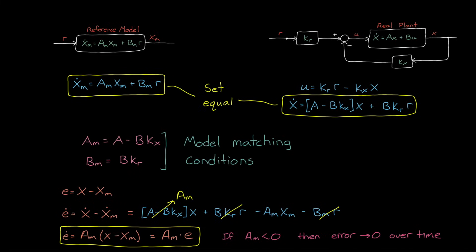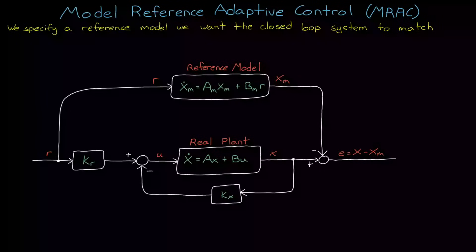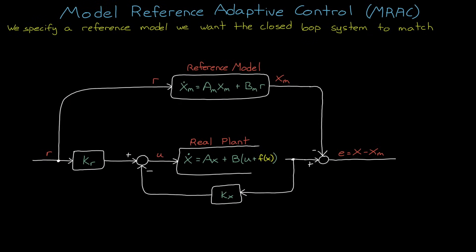But you can probably see a problem with this in that it assumes that we have perfect knowledge of the system we're trying to control. That is, not only do we know the parameters A and B, but we also know that the model itself perfectly captures the dynamics of the real system, which if we knew that we wouldn't need adaptive control in the first place. So there's going to be some amount of uncertainty, F of X, that makes picking KR and KX that's going to perfectly match the closed loop system to the reference model impossible. We are out of luck.